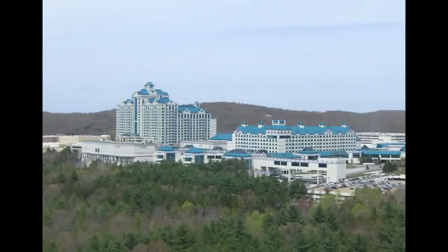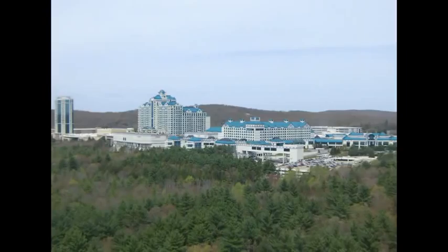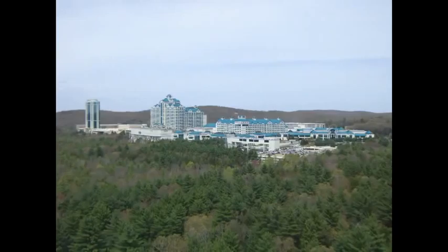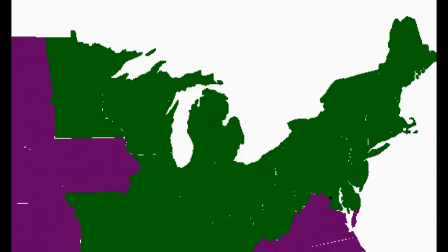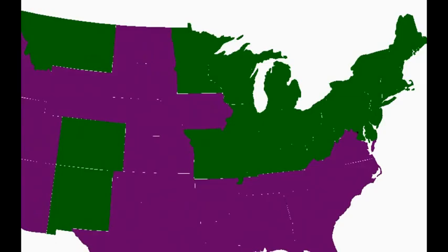Regardless of your personal feelings towards gambling, this is an impressive feat. The largest casino in the world is owned and operated by a tribal nation. However, despite this, they still fight the federal government over many things, including labor laws. Here's a map showing the United States broken down into states that support unions and right-to-work. Indian tribes, despite being sovereign nations, still fall under federal labor laws.